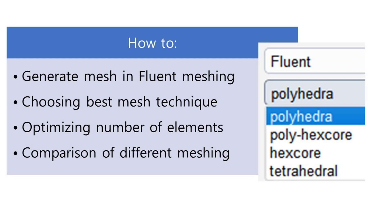Hello everybody, today we are going to learn about how to generate mesh in ANSYS Fluent, how to choose the best meshing techniques, and how to optimize the number of elements. Different meshing methods can create different quality and number of elements. We will compare different kinds of meshing available in ANSYS Fluent: polyhedra, poly hexacore, hexacore, and tetrahedral.